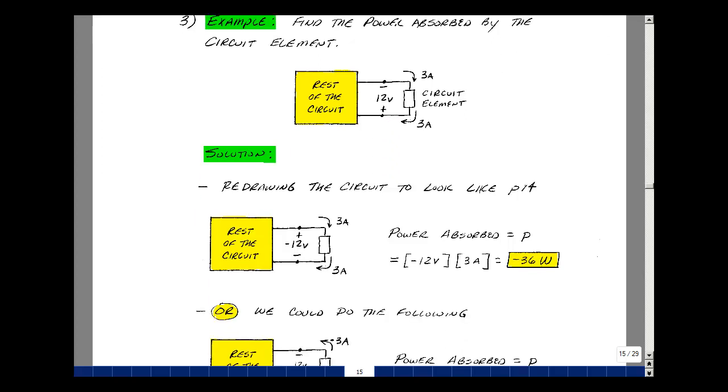If we want to make this look like the picture on the last page, we need to put the plus sign on the top and the minus sign on the bottom. Let's flip the direction of the voltage polarity, and when you do that, you've got to change the sign of the value. Now I've got the current entering the plus terminal and leaving the minus terminal. So it's the product of 3 amps and minus 12 volts. Power absorbed is minus 36 watts. In reality, this element is generating 36 watts of power.